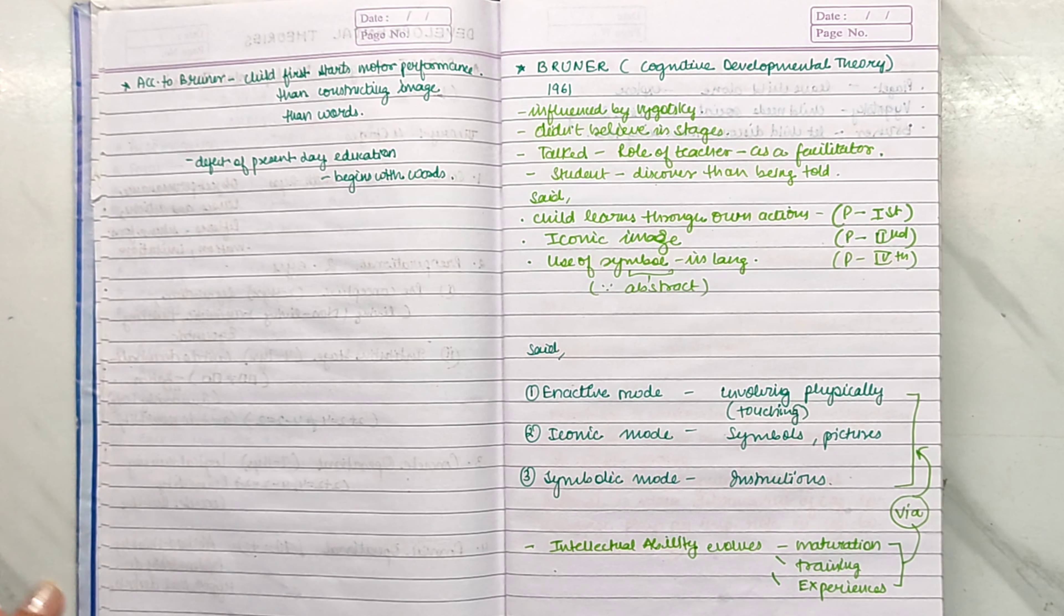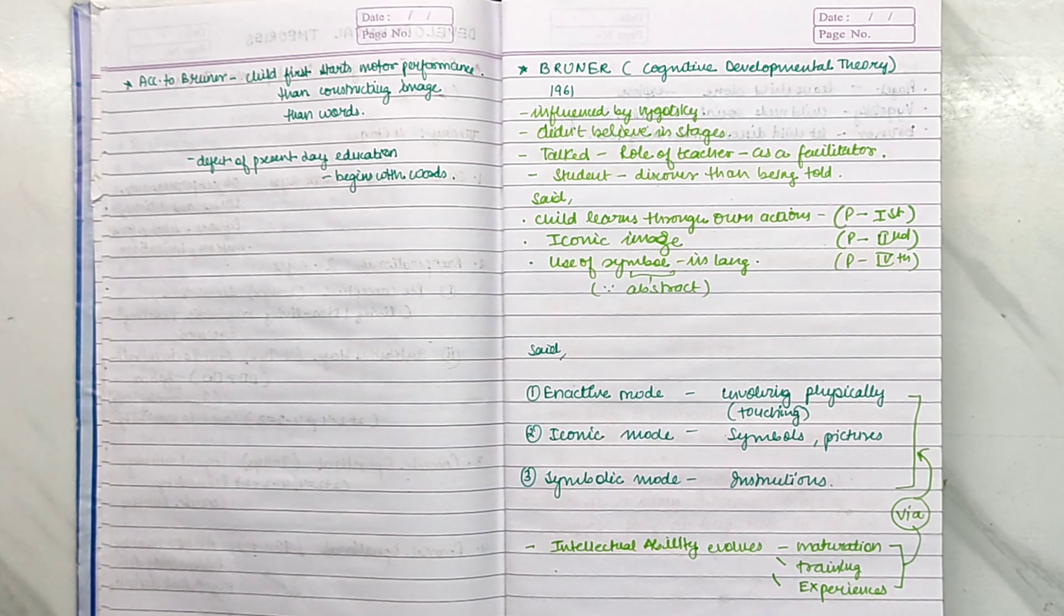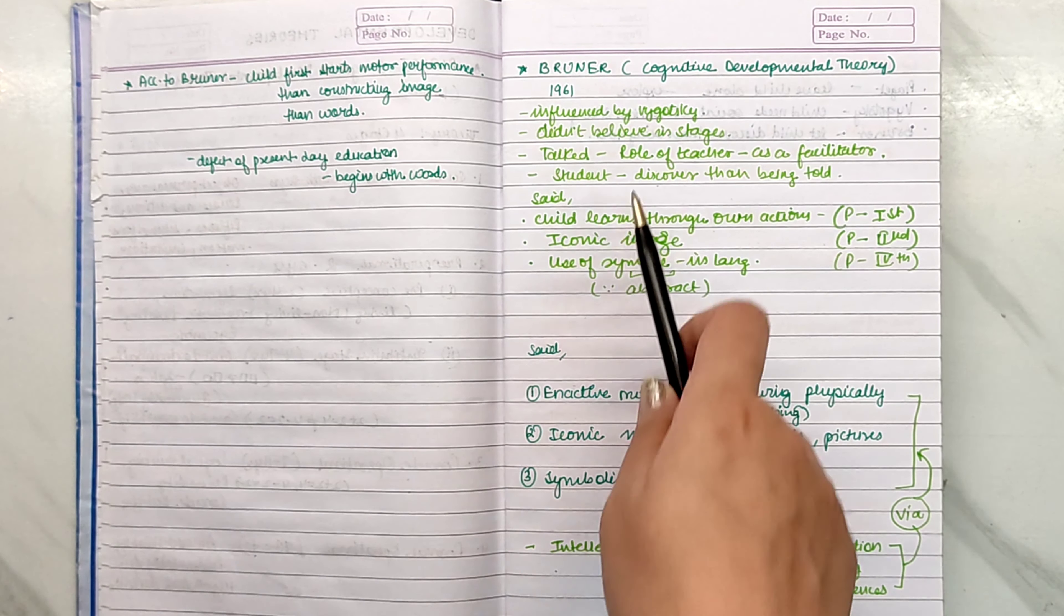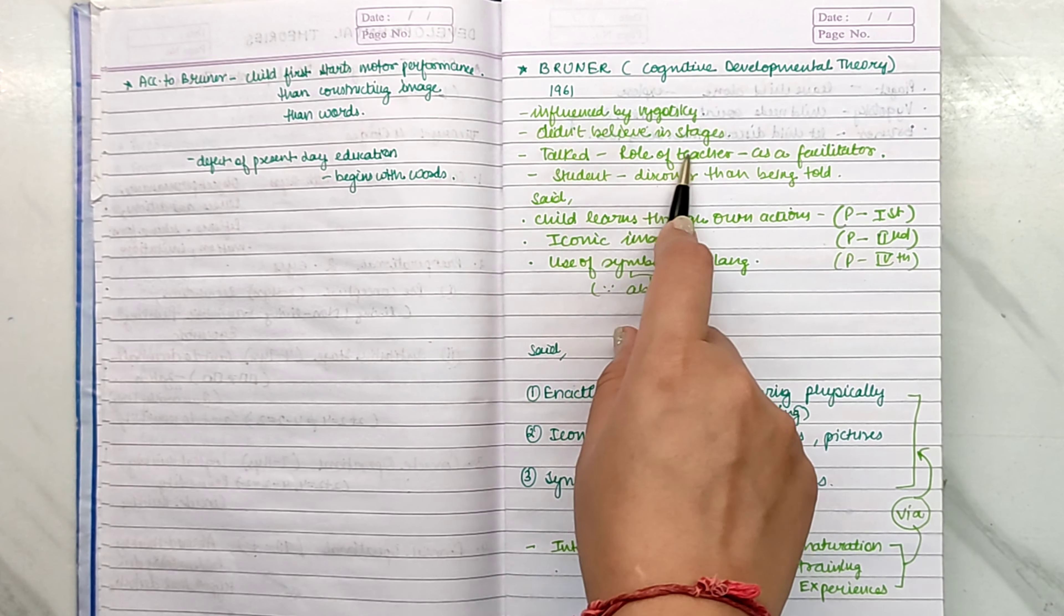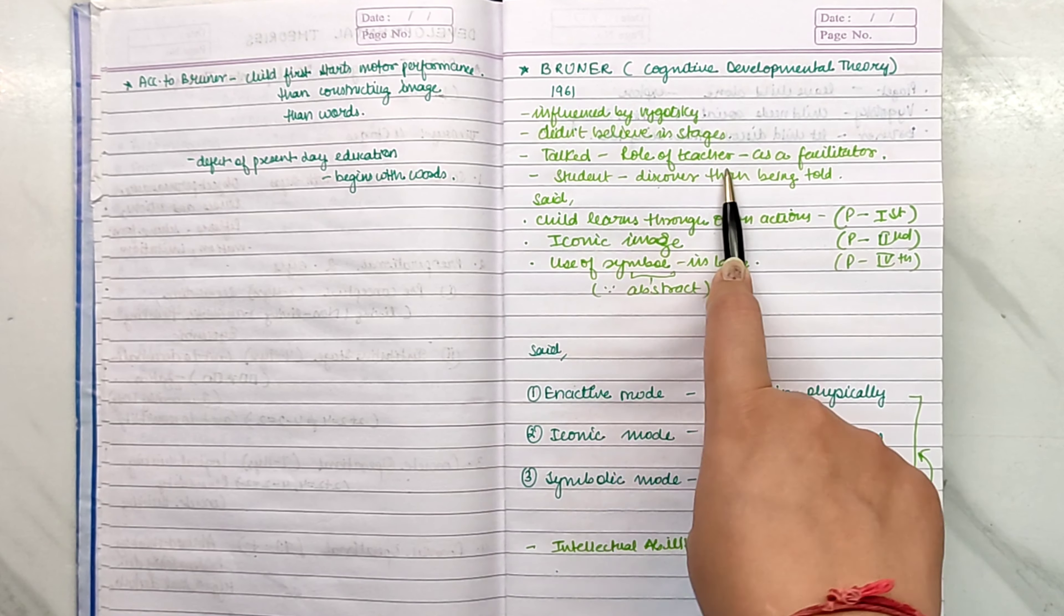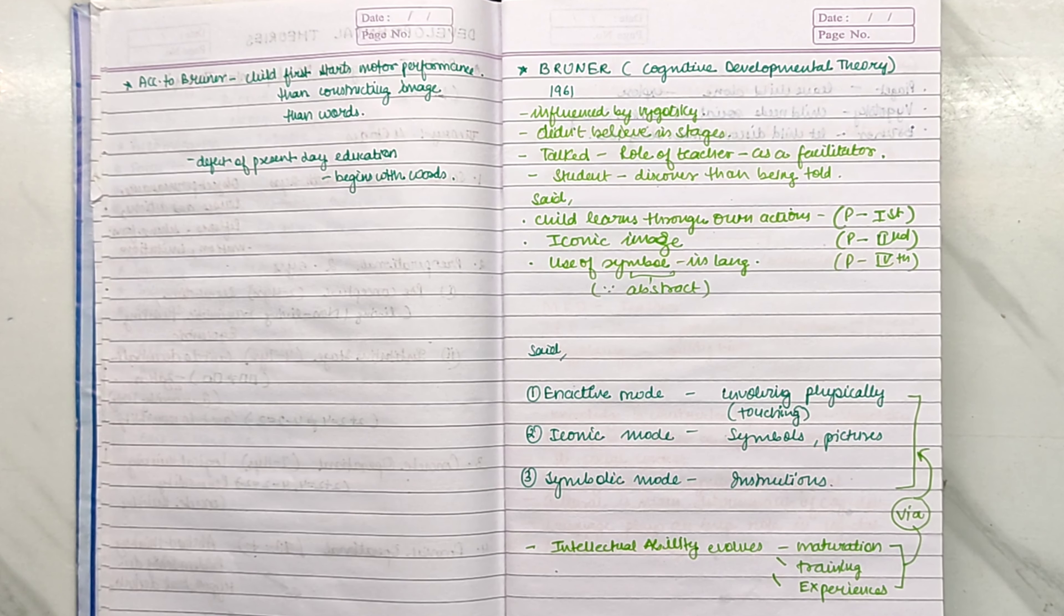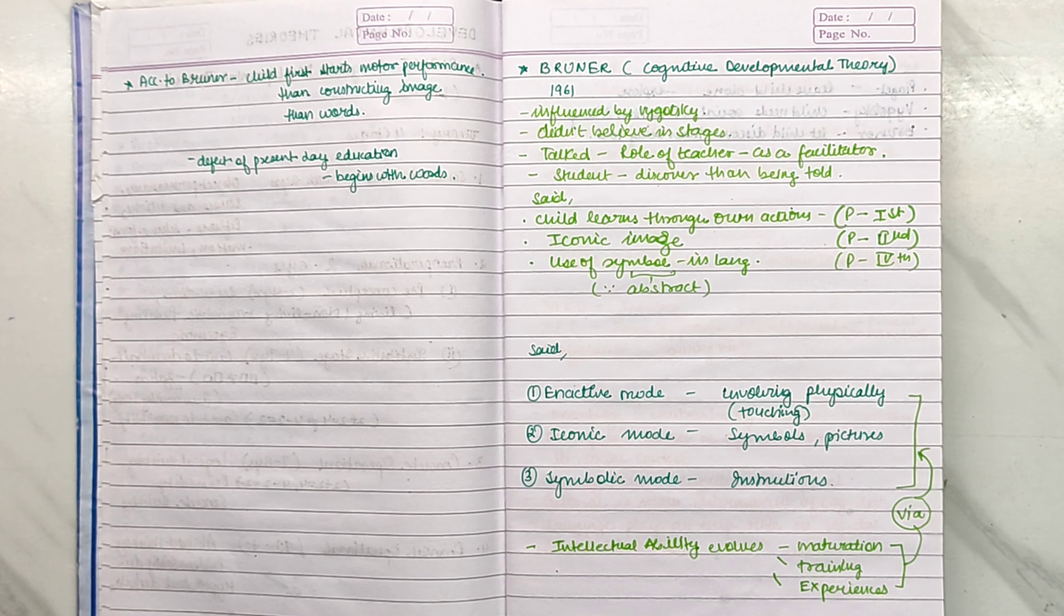Bruner had a Cognitive Developmental Theory after Piaget in 1961. And he was very much influenced by Vygotsky. But Bruner didn't believe in stages, and he said that the role of a teacher should be as a facilitator. Facilitator means the one who facilitates the child, rather than being a dictator. You facilitate the child and guide the child.